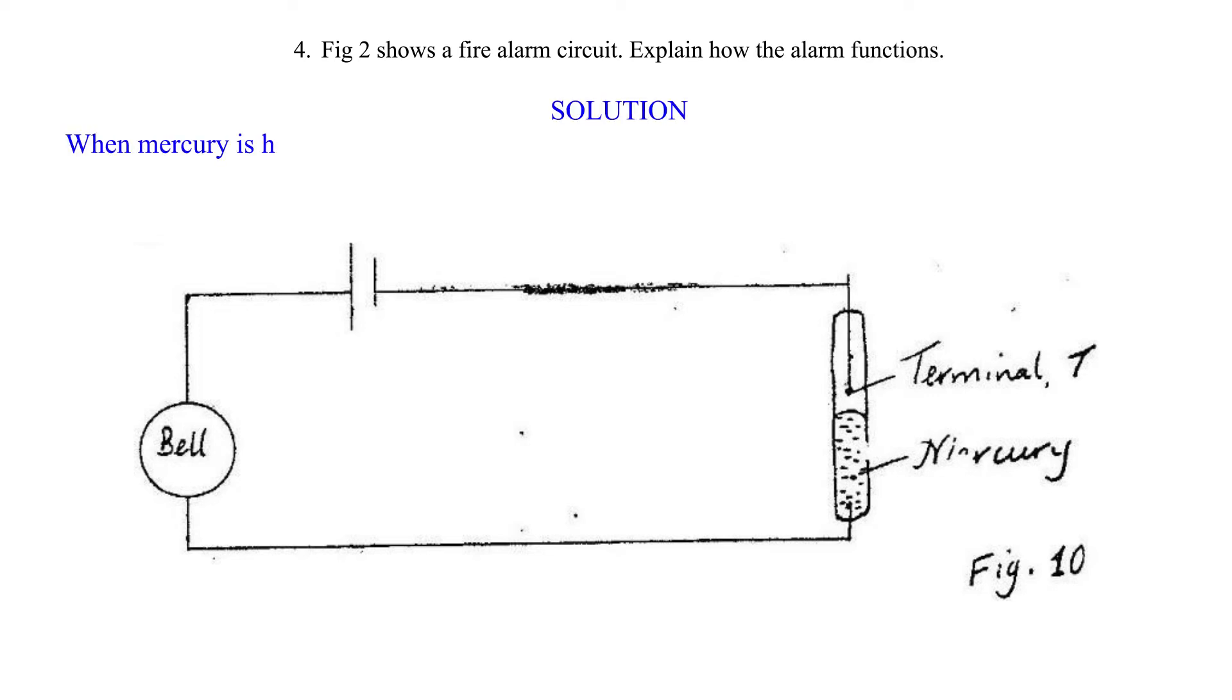Solution. When mercury is heated during a fire, it expands and makes contact, completing the circuit to ring the bell.